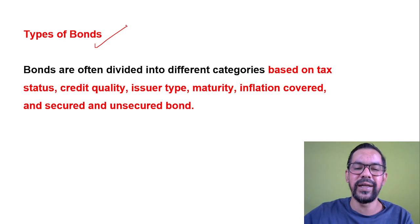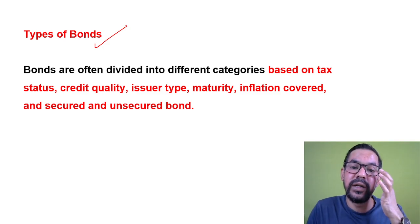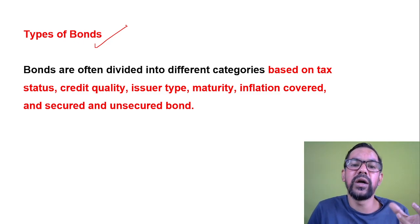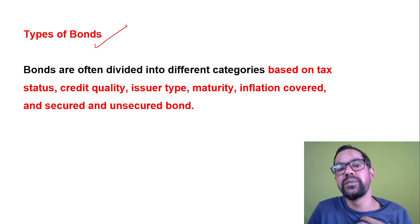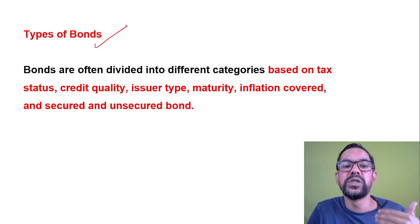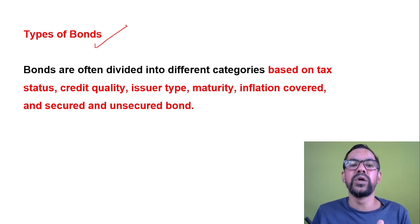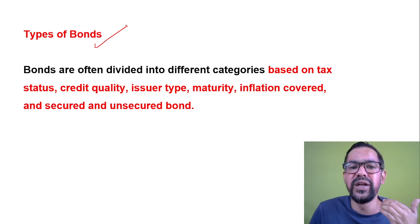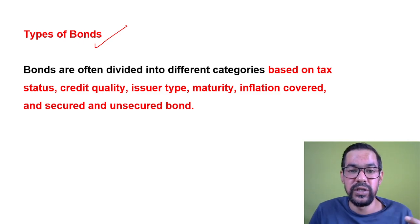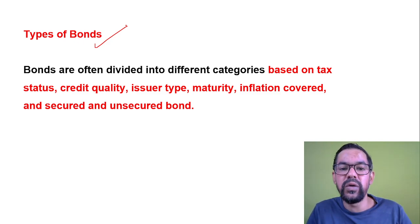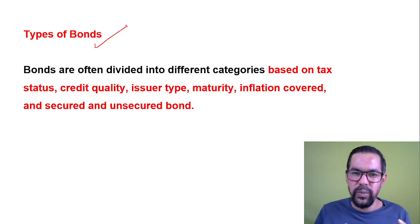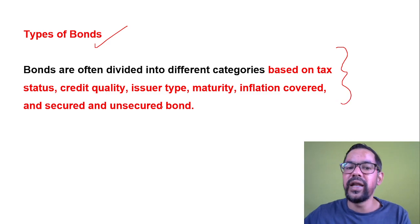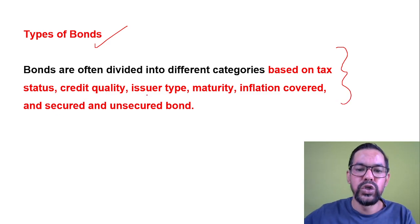Now, types of bonds. Different types of bonds exist based on different issuers: bonds issued by the Government of India are called sovereign bonds, those issued by state or municipal governments are called municipal bonds, and there are inflation-index bonds to protect investors from inflation. Bonds are often divided into different categories based on tax saving, credit quality, issuer type, maturity, inflation coverage, and whether they are secured or unsecured.